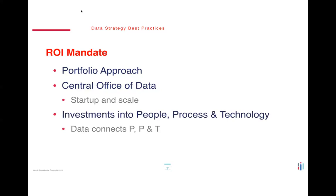People, process, and technology are the traditional levers in an organization — data connects them all. People and processes manipulate or produce data through technology. So investments into data will touch all three: people will need to be trained, hired, or retrained to accomplish new goals; new processes will have to be developed to maximize efficiency; and technology should enable all of these processes to happen.